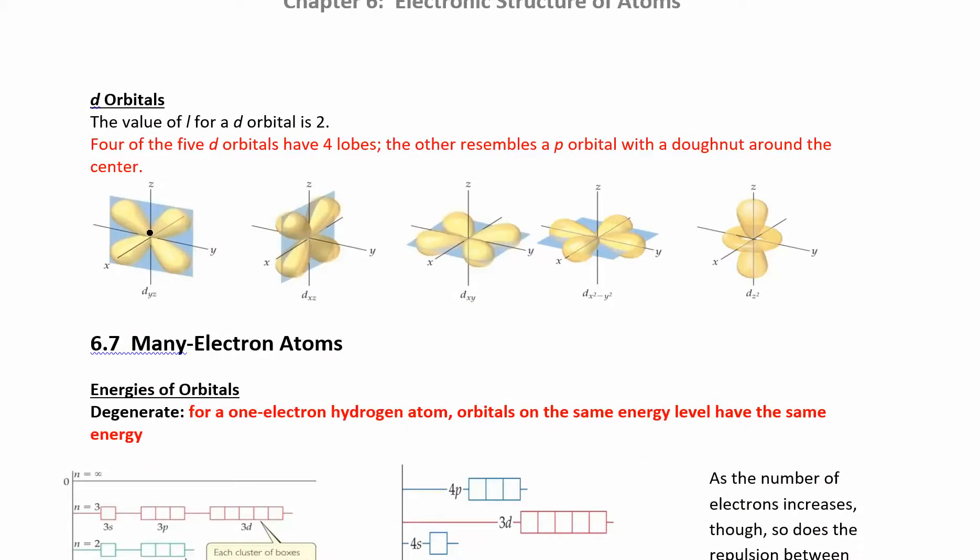D orbital, you have five different D orbitals. And they're all different shapes as well. So those are your orbitals.